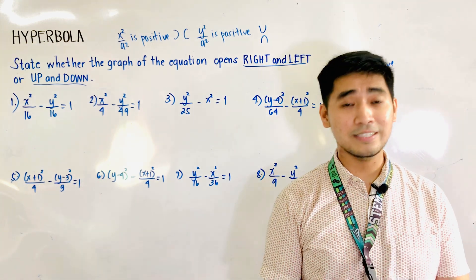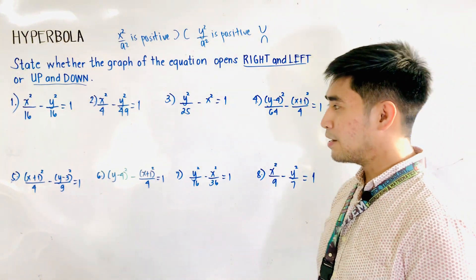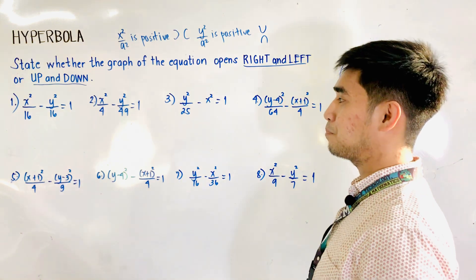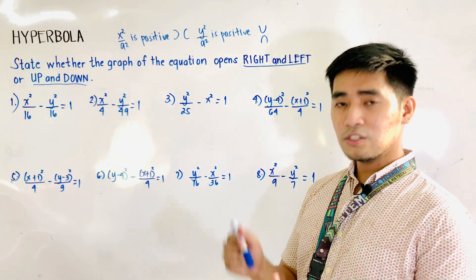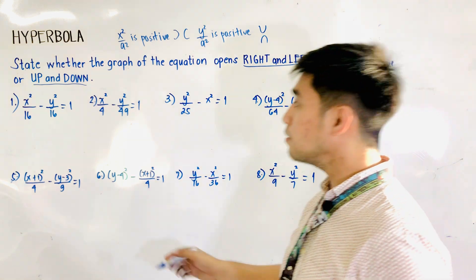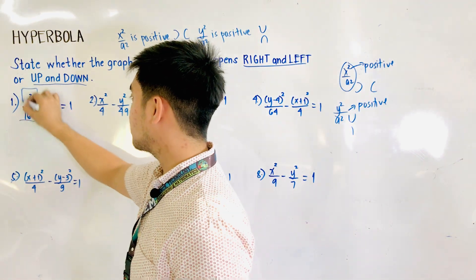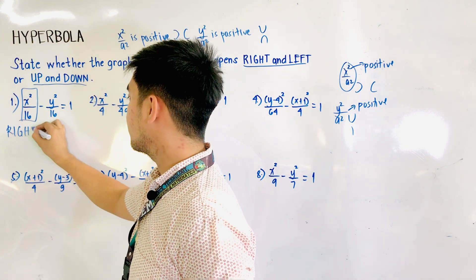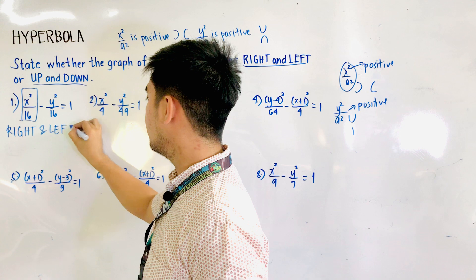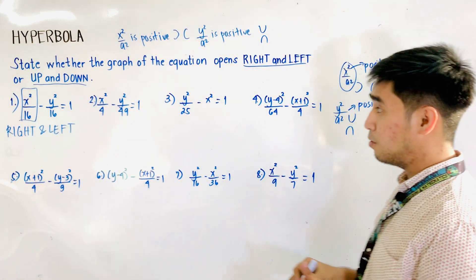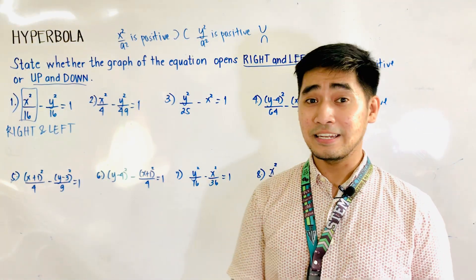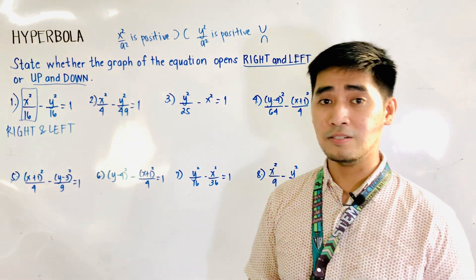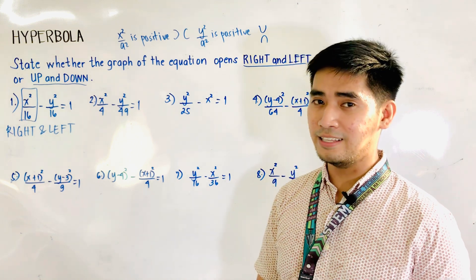Let's start with the first example. We are given x squared over 16 minus y squared over 16 is equal to 1. Which variable is positive? Therefore, x squared is the positive variable. We could now say that this opens right and left. Just look at the positive term or the positive variable, and in that case, that is x. Therefore, that is transverse axis x, also called TAX.